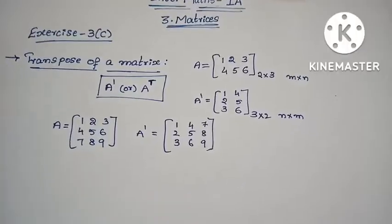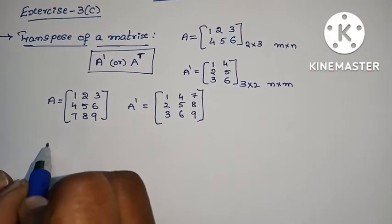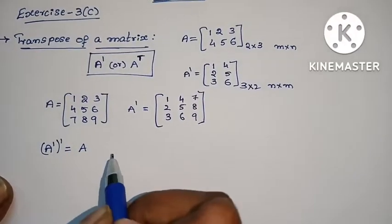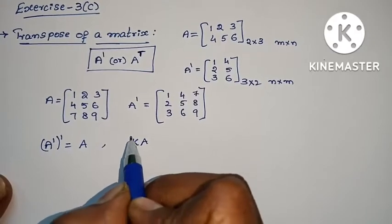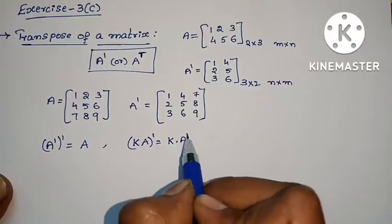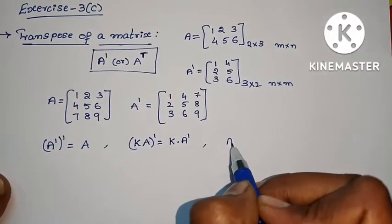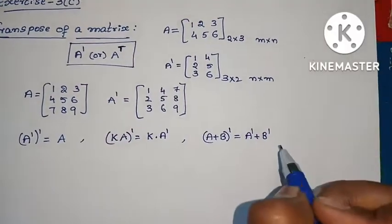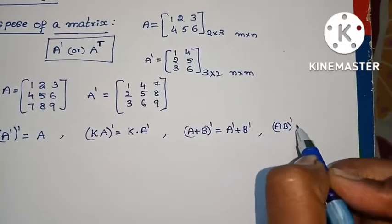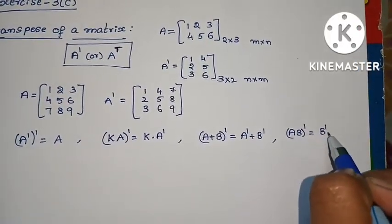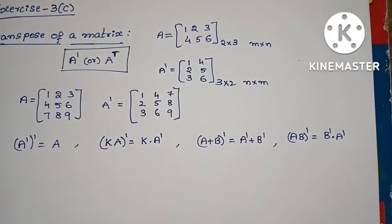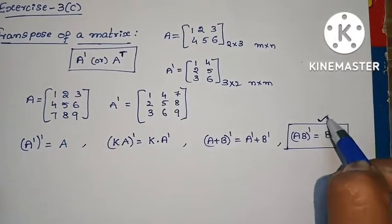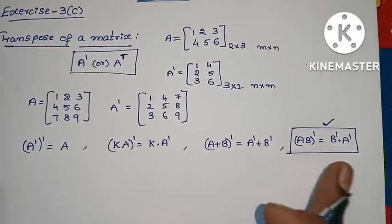Now we have some properties. Property 1: A transpose whole transpose equals A. Property 2: (kA) transpose equals k times A transpose. Property 3: (A plus B) whole transpose equals A transpose plus B transpose. Property 4: (AB) transpose equals B transpose into A transpose. This is very important — these formulas are also important.